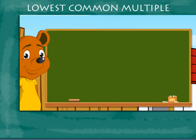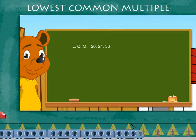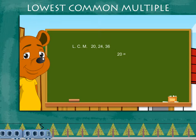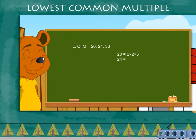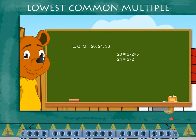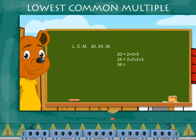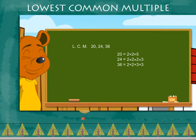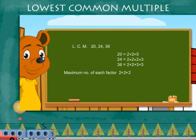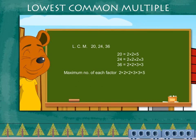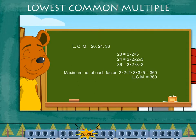Lowest Common Multiple. Toby now works on the least common multiple of 20, 24, and 36. He writes the factors: 20 = 2 × 2 × 5; 24 = 2 × 2 × 2 × 3; 36 = 2 × 2 × 3 × 3. He selects the maximum number of each factor: 2 × 2 × 2 × 3 × 3 × 5 = 360. So the lowest common multiple is 360.